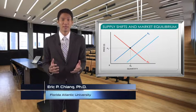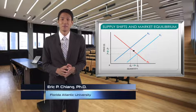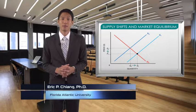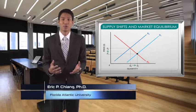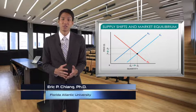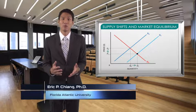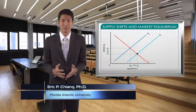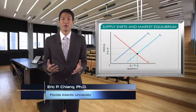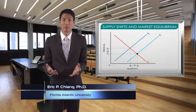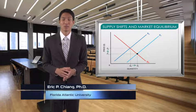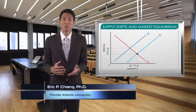Suppose an improvement in technology results in an increase in supply. This causes the market to move to a higher equilibrium quantity but a lower equilibrium price. This type of change is common for technology goods such as computers and smartphones, which have decreased in price over time. On the other hand, a rise in the price of oil or farm crops used to produce other goods would decrease supply, causing equilibrium quantity to fall but price to rise.